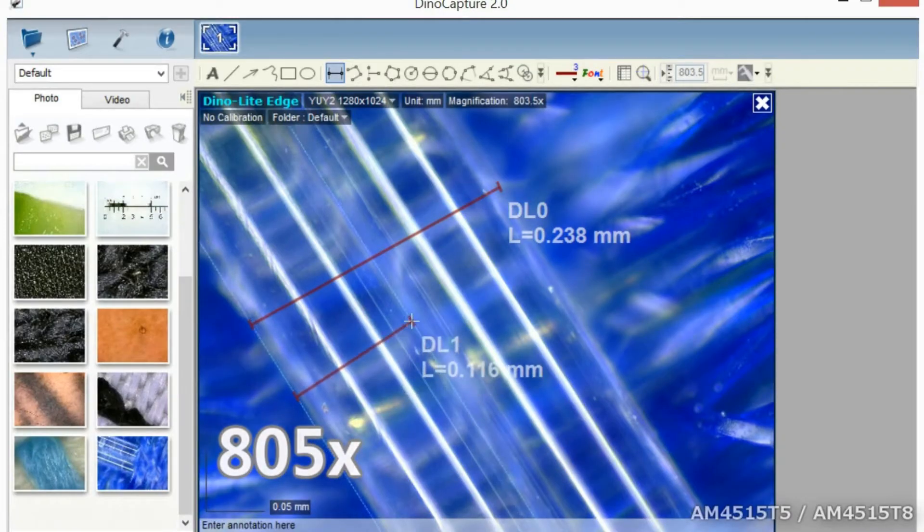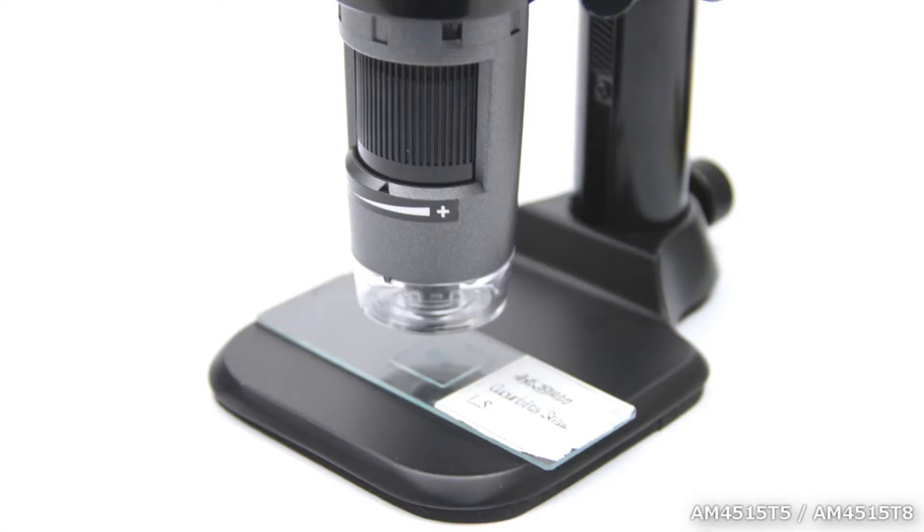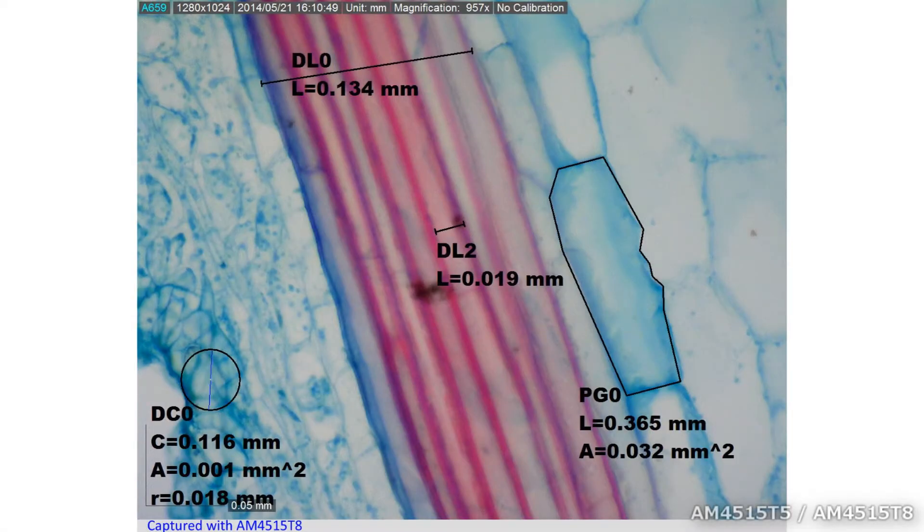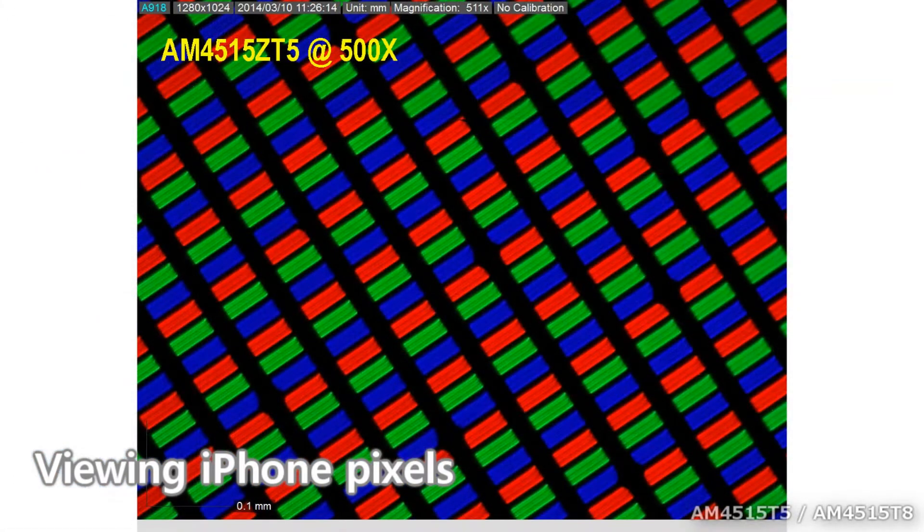These handheld Dynalight microscopes connect directly to a computer via USB 2.0 and use the included feature-rich Dino Capture 2.0 software which allows users to capture images, videos, and perform measurements and much more.